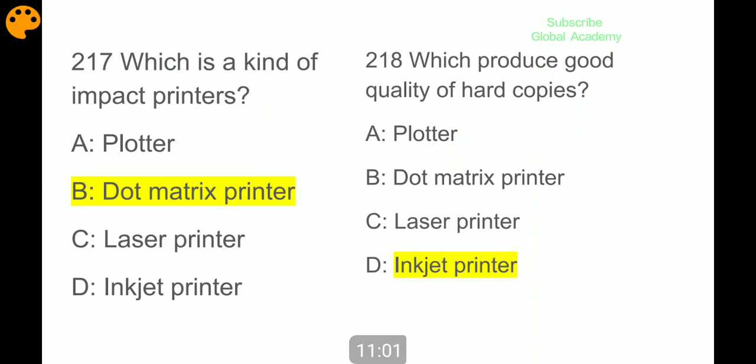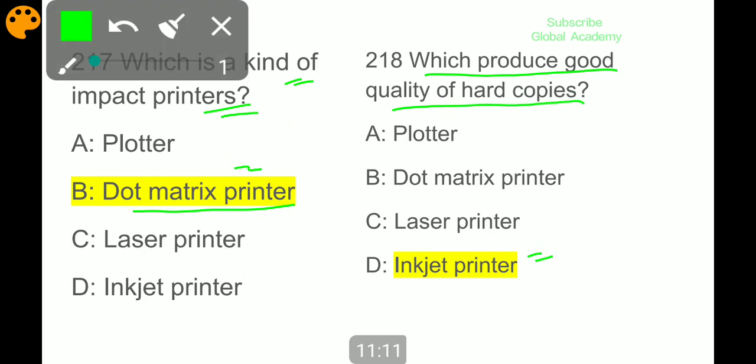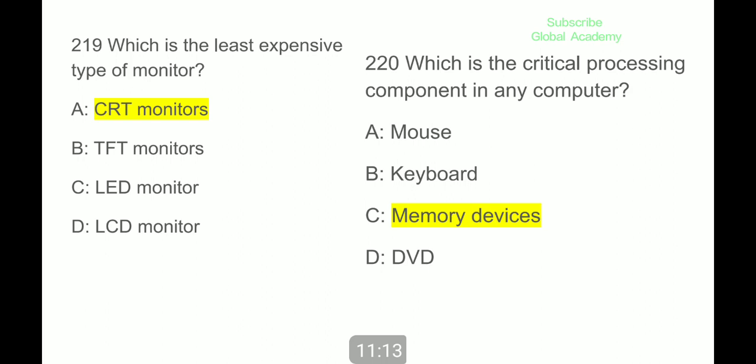Which is a kind of impact printer? Dot matrix printer. Which produces good quality hard copies? Inkjet printer. Which is the least expensive type of monitor? CRT monitors.